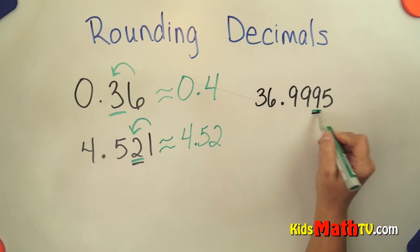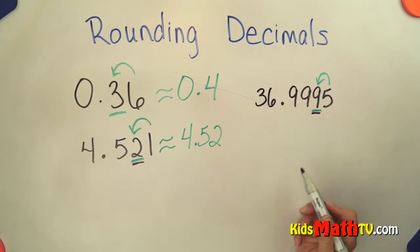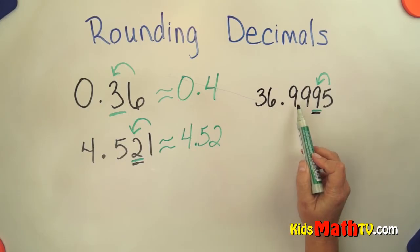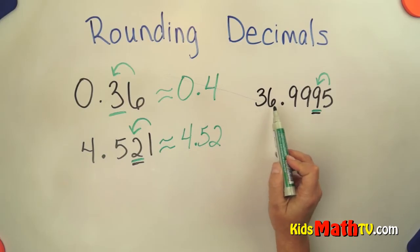So this 9 is in the thousandths place. This 5 is going to tell that 9 what to do. This is a tricky one. So this is either closer to 36 and 999 thousandths or 37 wholes.